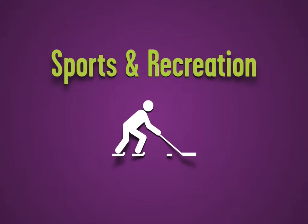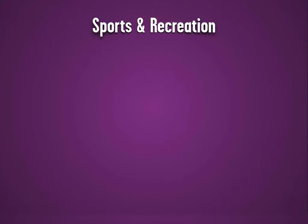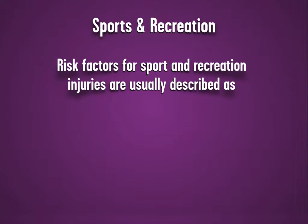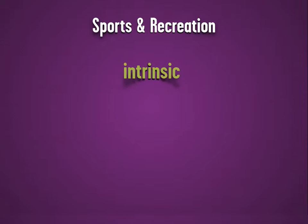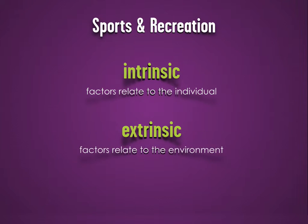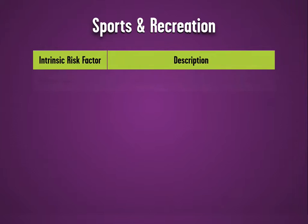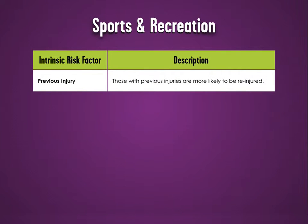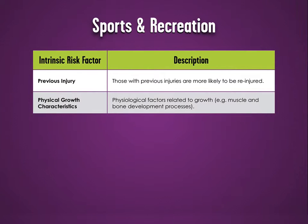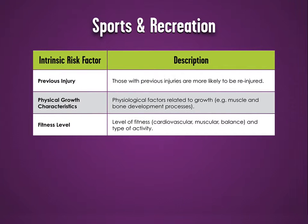Now let's look at sports and recreation. Risk factors for sports and recreation injuries are usually described as intrinsic or extrinsic. Intrinsic factors relate to the individual, whereas extrinsic factors relate to the environment. Intrinsic risk factors include previous injury — a prior injury is a strong risk factor for experiencing another. Physical growth characteristics, such as muscle and bone development, can increase injury risk. Fitness level and type of activity can also impact injury risk.